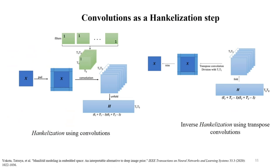We also experimented with using convolutions as a hankelization step. In this approach, the filters of the convolution are replaced by duplication matrices. It has been found that this operation also generates a Hankel matrix that can be reshaped into several higher-order tensors. The inverse hankelization using convolution is simply transposed convolution with filters replaced by duplication matrices.